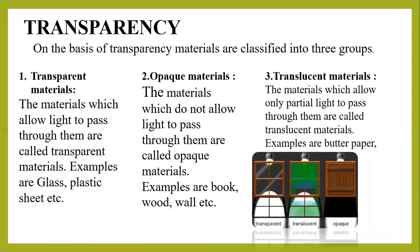Next property is transparency. On the basis of transparency, materials are classified into three groups: number one, transparent materials; number two, opaque materials; number three, translucent materials. The materials which allow light to pass through them are called transparent materials. For example, glass, plastic sheet, etc.